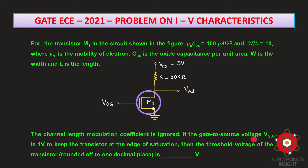The gate-to-source voltage VGS is given as 1 volt, keeping the transistor at the edge of saturation, meaning transistor M1 has entered saturation. The condition for the transistor to be at the edge of saturation is VDS = VGS − VT. If VDS were less than VGS − VT, the transistor would be in the linear region instead. The regions of operation of an NMOS transistor are explained in a separate video linked in the description box below.